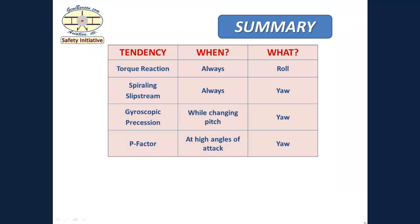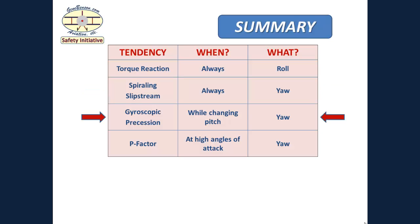So, for review: torque operates whenever the propeller is turning and produces a roll tendency. Spiraling slipstream also operates whenever the propeller is turning and produces a yaw tendency. Gyroscopic precession operates only while the pitch of the airplane is changing, and it produces a yaw tendency. And finally, P-factor operates only when the airplane is at a high angle of attack, and it also produces a yaw tendency.